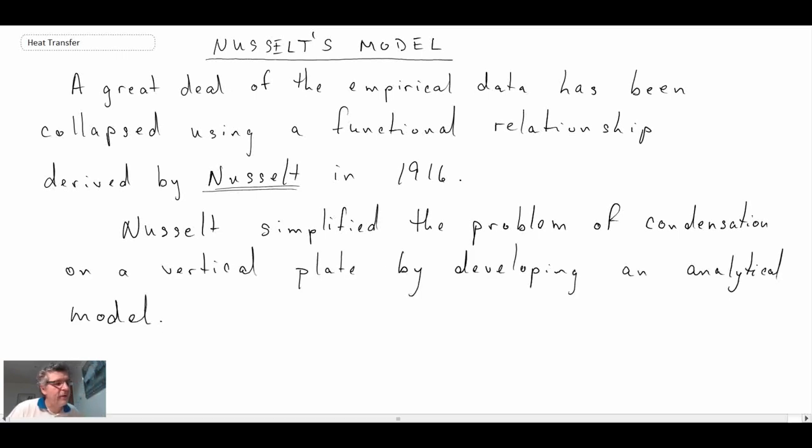So we'll begin by looking at Nusselt's model. He was doing a combination of force balance, and as well, he was looking at dimensional reasoning, so dimensional analysis. Let's begin with the schematic for how Nusselt envisioned the flow field for when we have film condensation on a vertical plate.